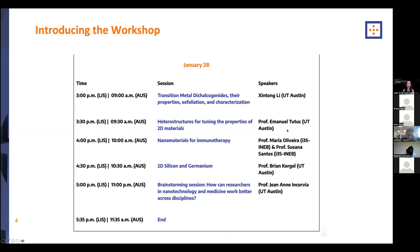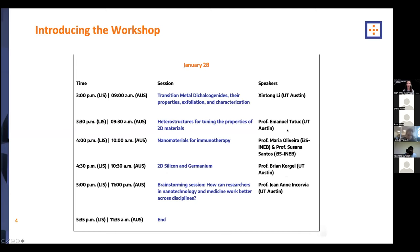When you come back tomorrow, Zintang Li, a PhD student in my group, will talk about practical details of transition metal dichalcogenides — their properties, exfoliation, and characterization. Then Professor Emmanuel Tutuk will talk about heterostructures, how we can tune 2D material properties by layering them. We'll also have talks on nanomaterials for immunotherapy, 2D silicon and germanium, and a second brainstorming session.